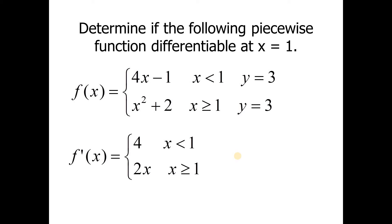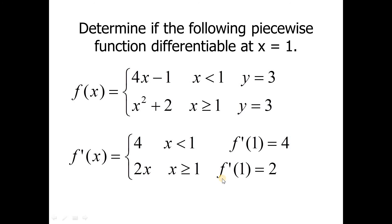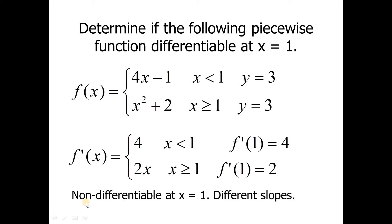Now I'll take the derivative of each piece to check if they have the same slope. The derivative of the top piece is just 4. The derivative of the bottom piece is 2x by the power rule. Plugging in x equals 1: the top piece has a derivative of 4, and the bottom piece gives 2 times 1 equals 2. The slopes are different, so this function does not pass the second test and is non-differentiable at x equals 1.